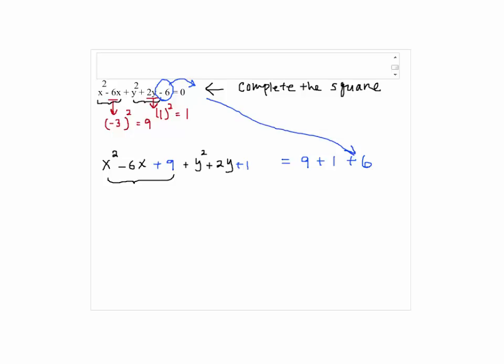So we have x squared minus 6x plus 9. That will give us a complete square of x minus 3 squared. And y squared plus 2y plus 1 will give us y plus 1 squared.